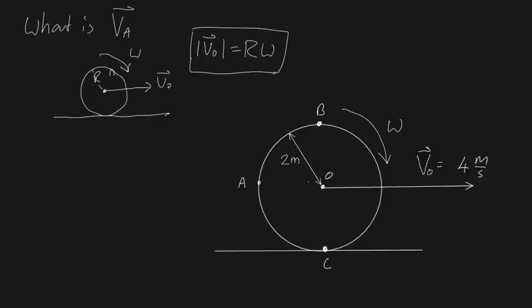Now let's directly solve this problem. The velocity of A is going to have two components: one due to the translational movement of the entire wheel sliding to the right, and one due purely to rotation. Fortunately we have a formula to help: VA relative to O equals VA minus VO, which rearranges to help us figure out the velocity of A.